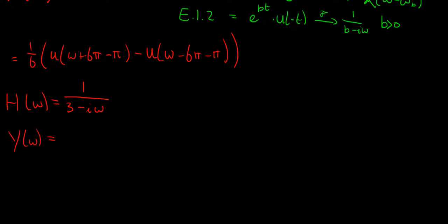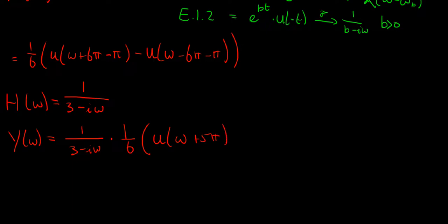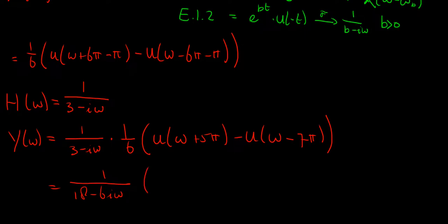Now we can calculate Y(ω), which is just X(ω) multiplied by H(ω). So we get Y(ω) = 1/(3 − iω) multiplied by one-sixth times [u(ω + 5π) − u(ω − 7π)], which we can rewrite as [u(ω + 5π) − u(ω − 7π)] over (18 − 6iω).